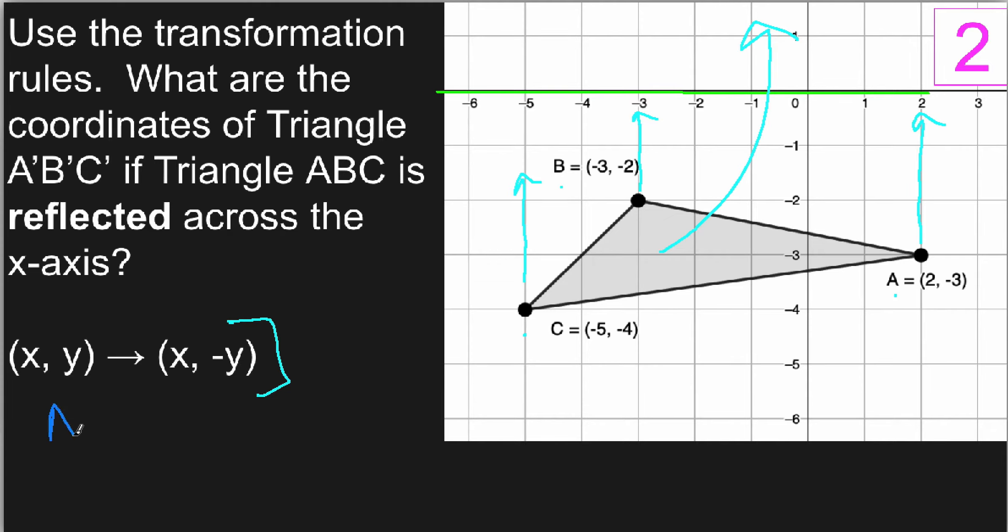If A is located at 2, negative 3, then A prime will be the x value, which is 2, and the opposite of the y value. So the opposite of negative 3. This means A prime is going to be at 2, positive 3.